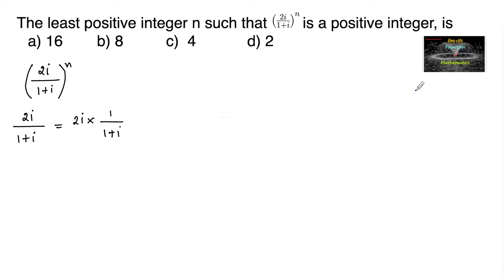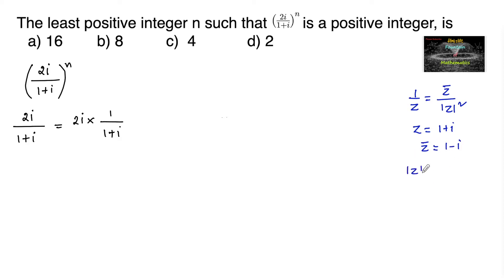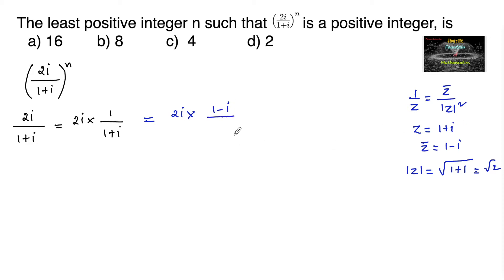Since we know that 1/z equals z-bar divided by |z|^2, if z = 1+i, then z-bar = 1−i (its conjugate) and |z| = √(1+1) = √2, so |z|^2 = 2. We can write this as 2i × (1−i)/2.